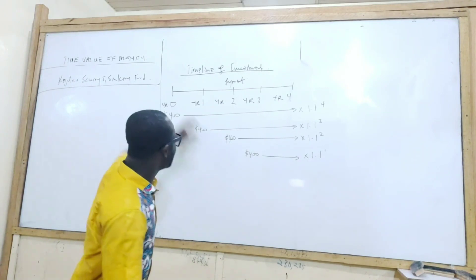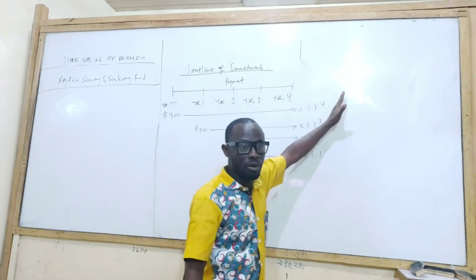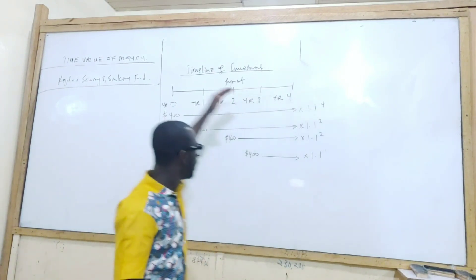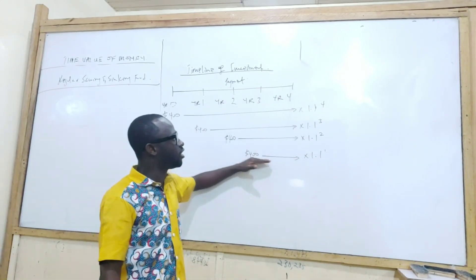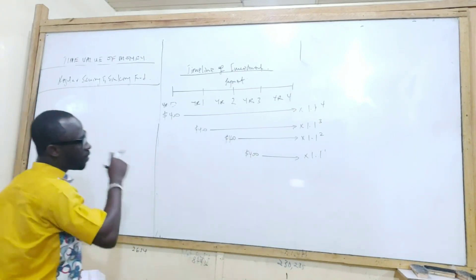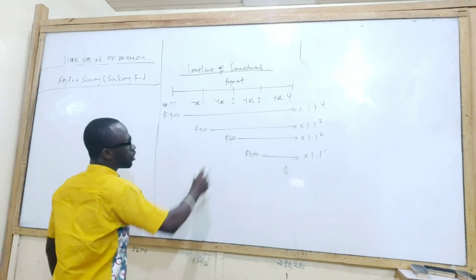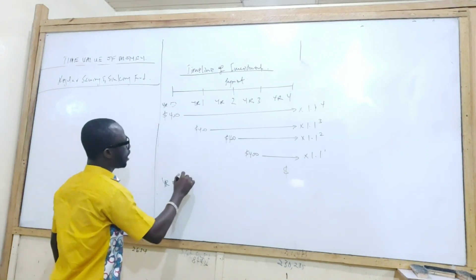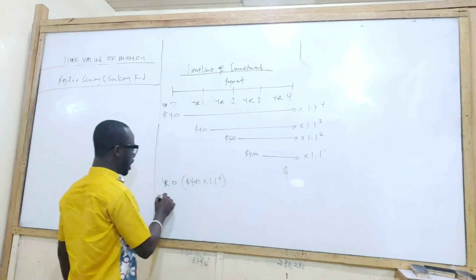So the first money the company puts in will be there for four periods: 400 × 1.1^4. The second money will be there for three periods: 400 × 1.1^3. The third will be there for two periods: 400 × 1.1^2. And the fourth one will be there for one period: 400 × 1.1^1. The question is how do we calculate how much Lekki will have at the end? Year zero investment: 400 × 1.1^4.